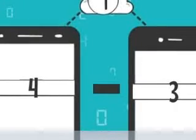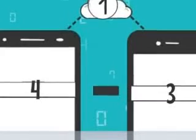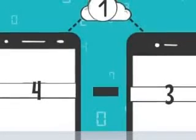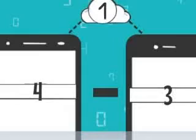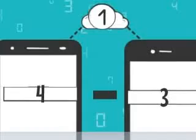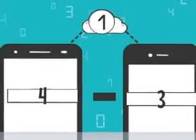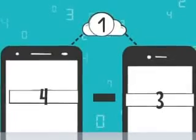Now count after the smaller number. Look for the smaller number. Which number is the smaller number? Yes, it's 3. Now count after 3. 3, 4. The answer is 1.